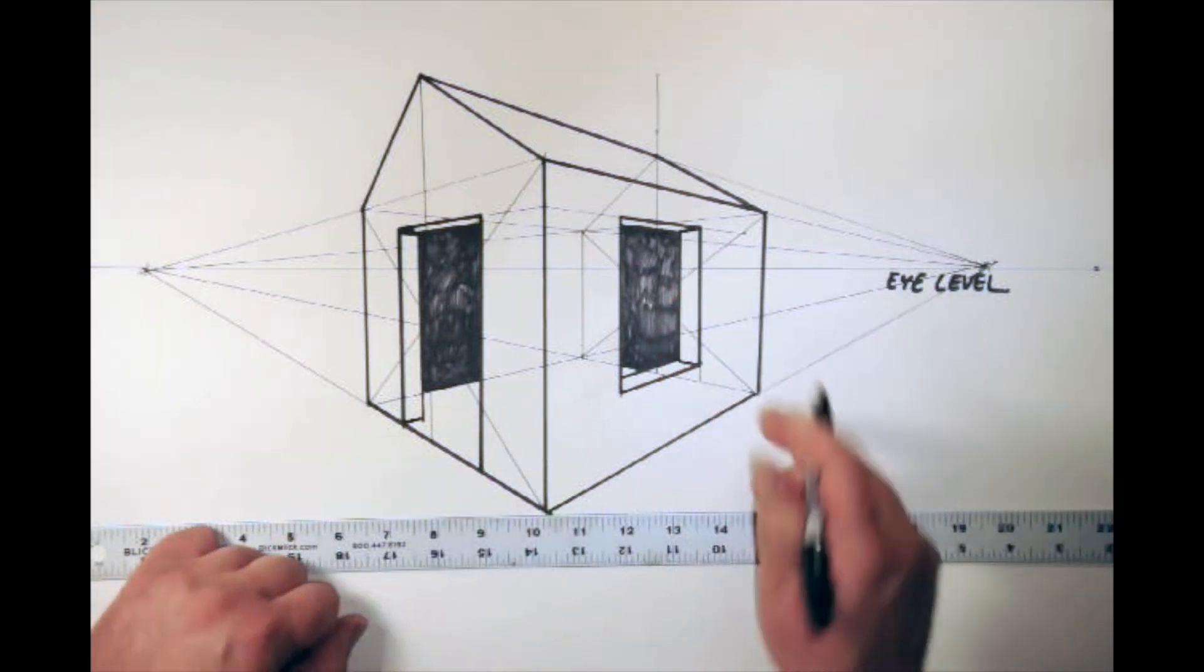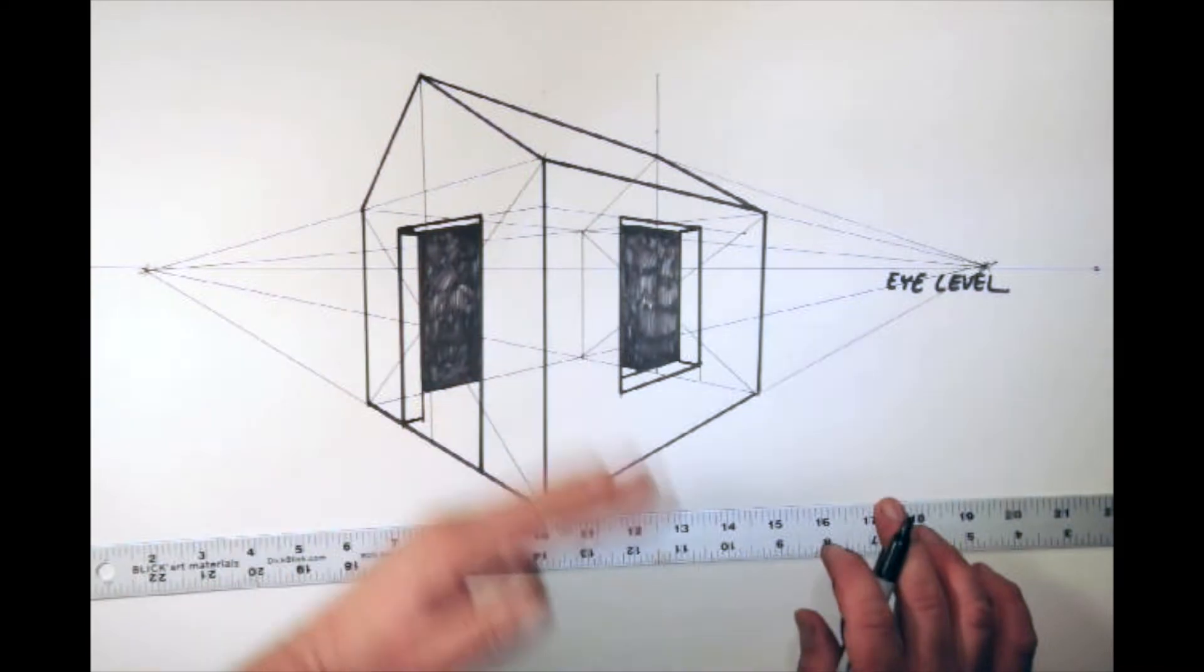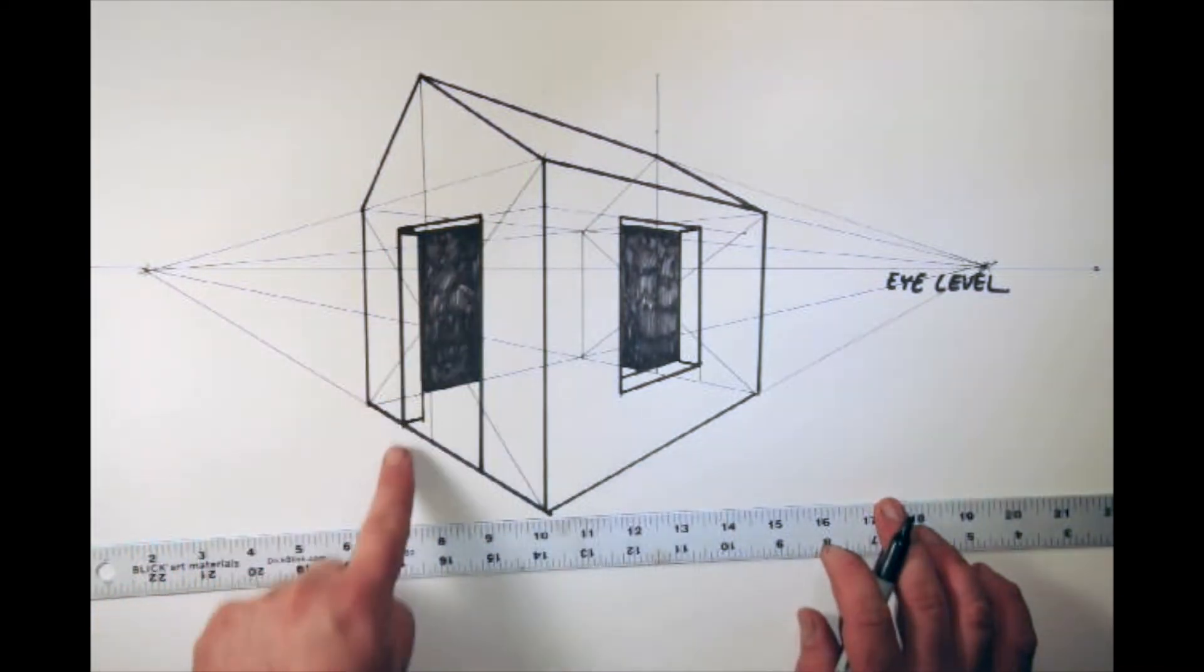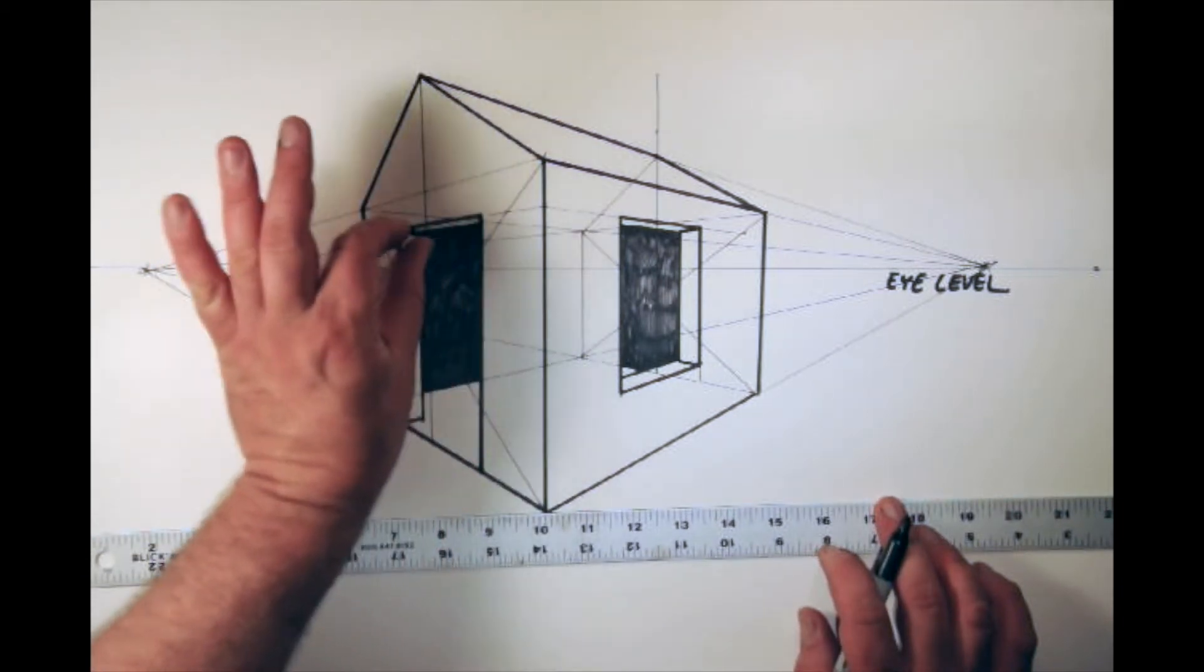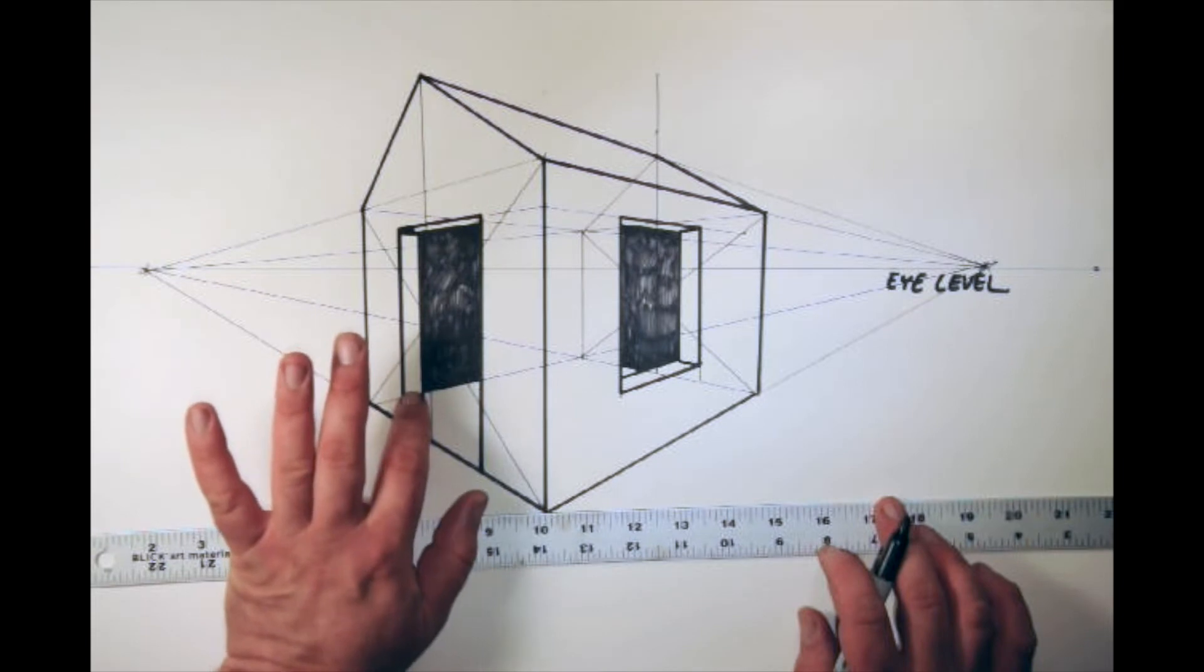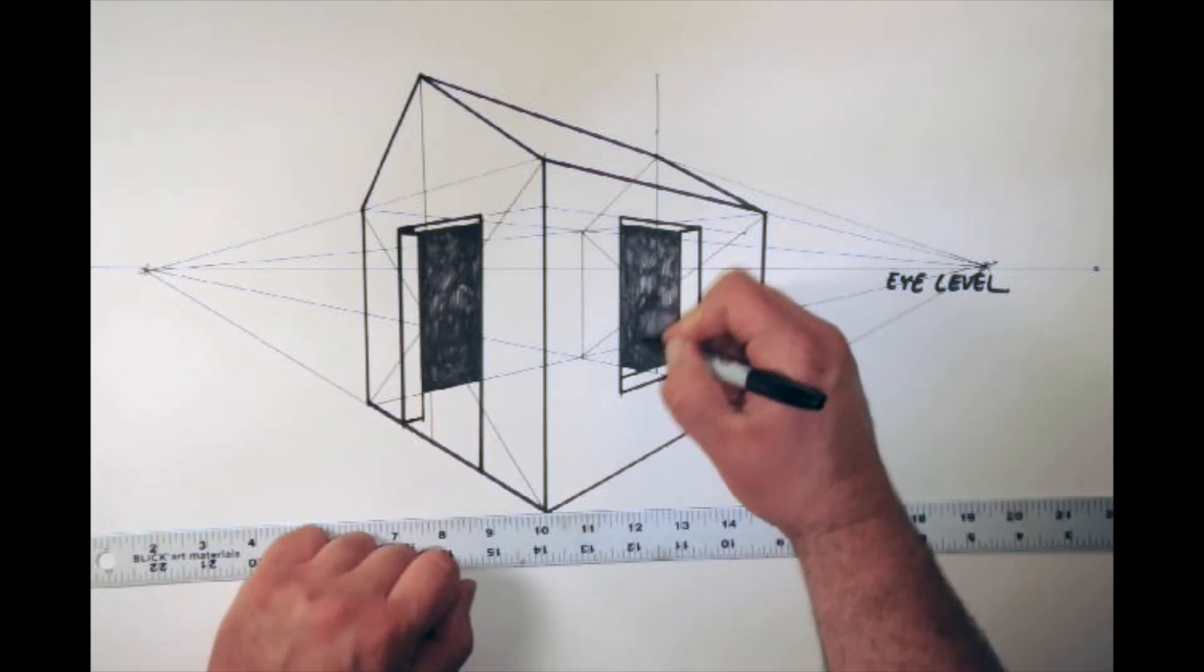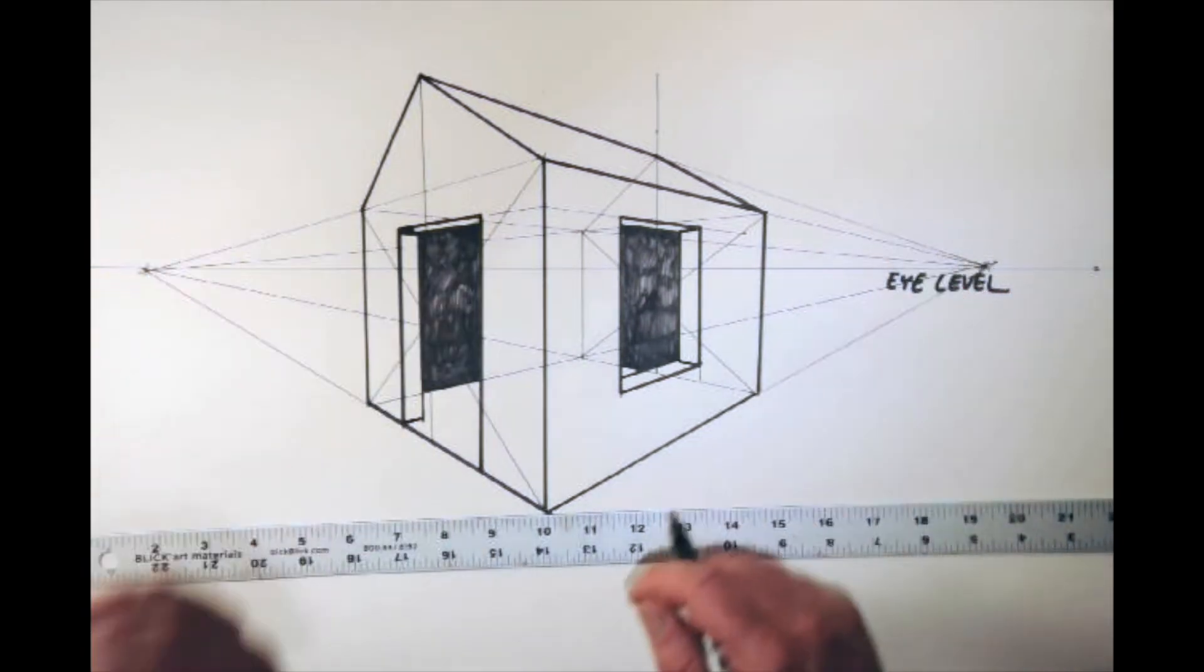So we have the pitch of our roof, we added a shape to our box, we cut into the box with a doorway, revealed the floor inside, gave thickness to the wall of that structure, and then did the same thing over here with this window. That's really all I want from you today.